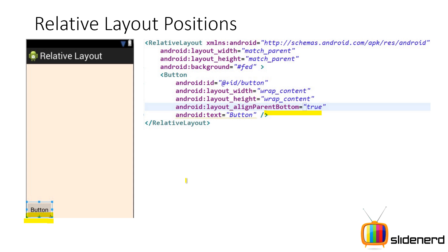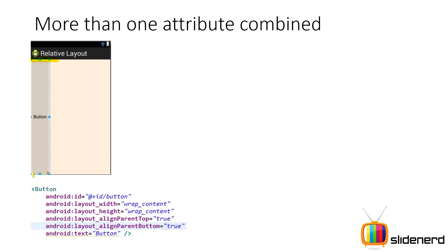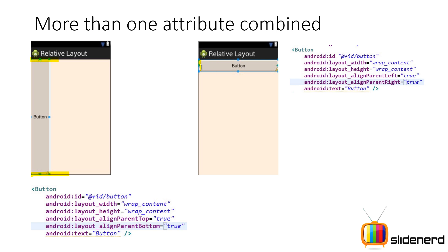Now let's see what happens when there is more than one attribute together. If I say alignParentTop equals true and alignParentBottom equals true, I'm trying to stick the top edge of the button to the top side and the bottom edge to the bottom side of the relative layout. The button gets stretched vertically — it's just like chewing gum on a wall. Similarly, if you say alignParentLeft equals true and alignParentRight equals true, the left side of the button is stuck with the left side of the relative layout and the right side with the right side, so the button stretches horizontally.